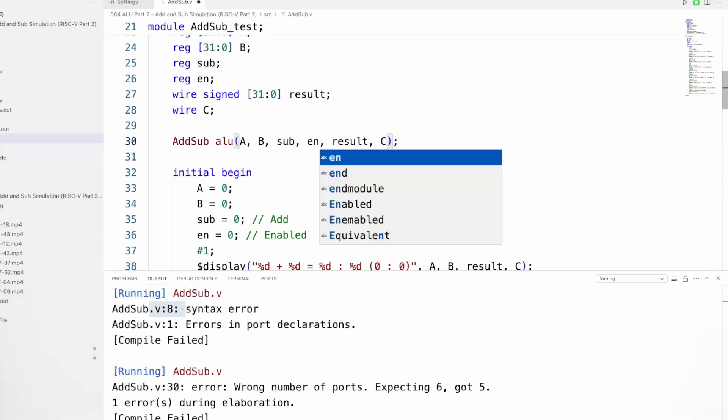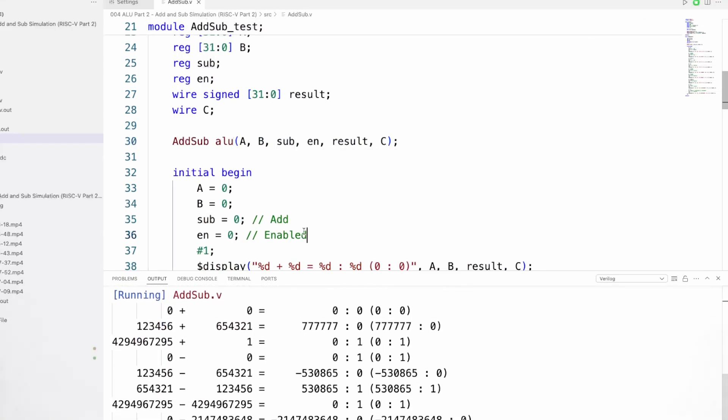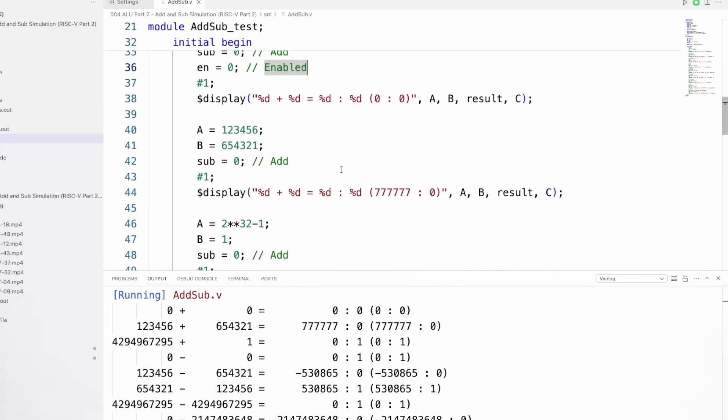So now we've got our result. We're running the test. This is the same test that we ran previously. We can see that all of our outputs are coming through correctly. So the result is our third output here. So we have zero plus zero and then we have our result in this column here. They're all still working.